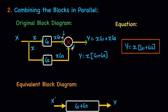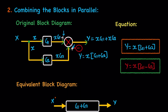If the sign is negative for one of the parallel paths, the final result becomes y equals x times (g1 minus g2). Instead of g1 plus g2, the final value is g1 minus g2. It is purely based on what sign is given.